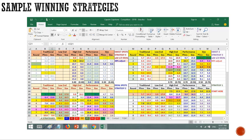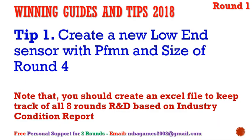We need the Excel file to check R&D and marketing and pricing for all eight rounds, so we can update more precisely and faster. Round one is the most important — if we make a mistake, it takes one or two rounds to fix it, especially in R&D. So I bring two videos for rounds one and two, and a third for an overview of all eight rounds.